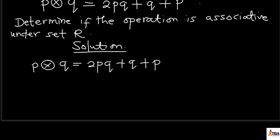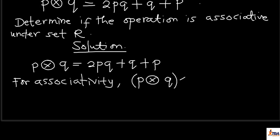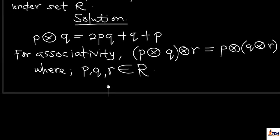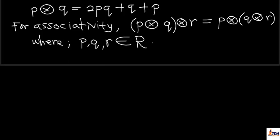For associativity, each property has its own rule. For associativity, we need to remember that (p ⊕ q) ⊕ r must equal p ⊕ (q ⊕ r), where p, q, and r are all elements of set R. We will introduce a new value r and test whether both sides give the same result. To verify, I can take specific values.